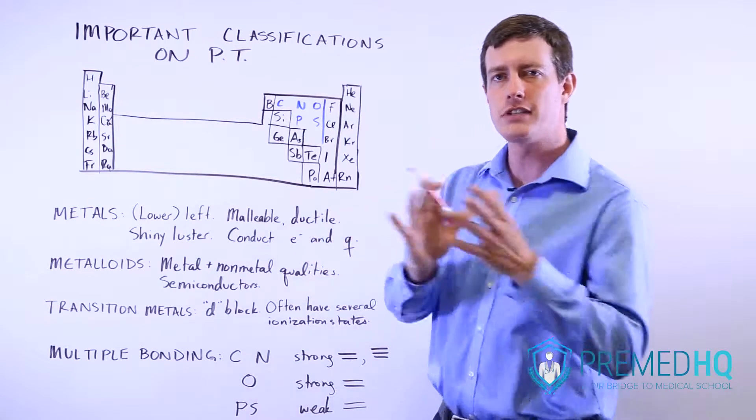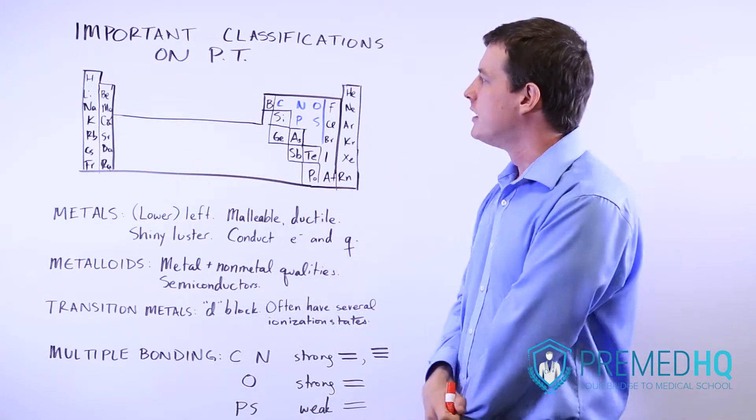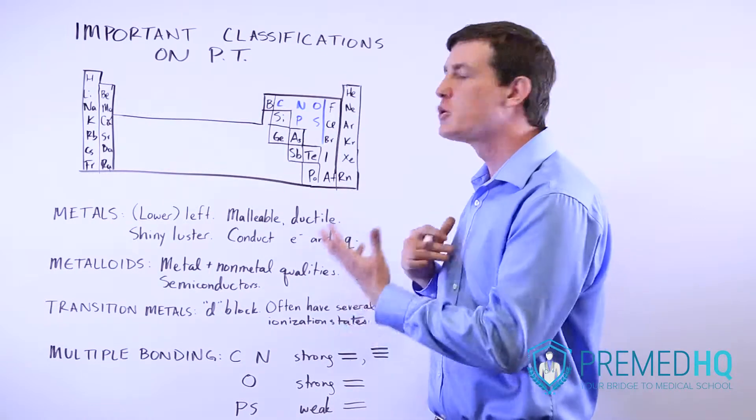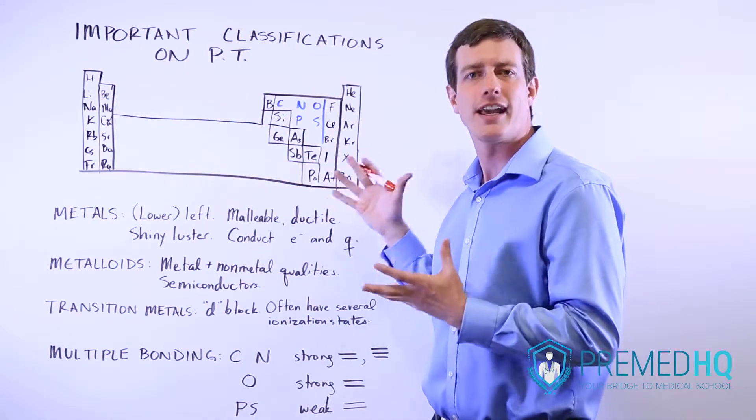They can do it multiple ways by shifting electrons between S, D, and P orbitals. So the transition metals are most distinctive because of their ability to form multiple different cations.